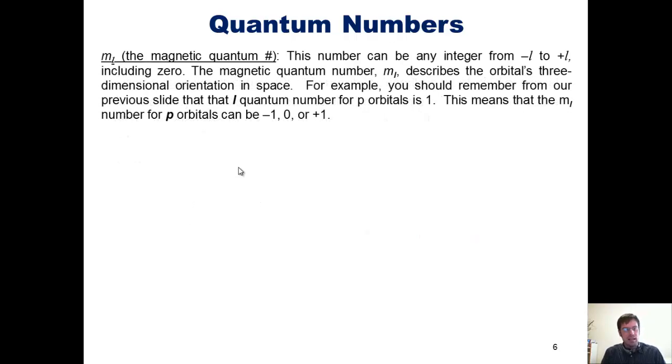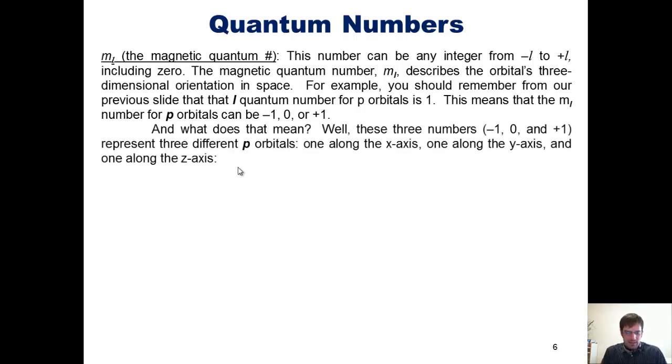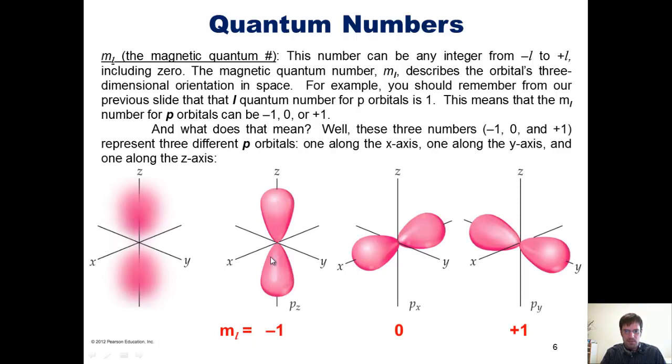The third quantum number is m sub l, called the magnetic quantum number. This number can be any integer from negative l to positive l, including 0. The magnetic quantum number, m sub l, describes the orbital's three-dimensional orientation in space. For example, you should remember from our previous slide that the l quantum number for p orbitals is 1. This means that the m sub l number for p orbitals can be negative 1, 0, or positive 1. And just what does that mean? Well, it means that these three numbers, negative 1, 0, and positive 1, represent three different p orbitals, one along the z-axis, one along the x-axis, and one along the y-axis.